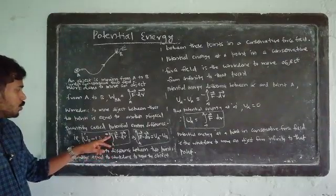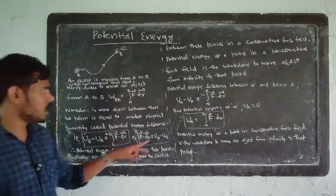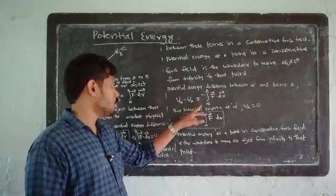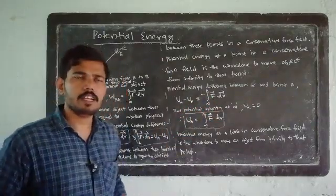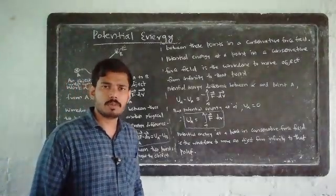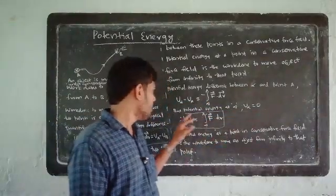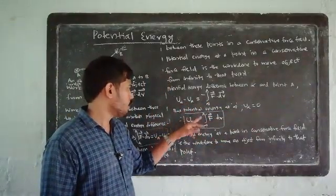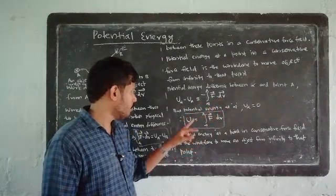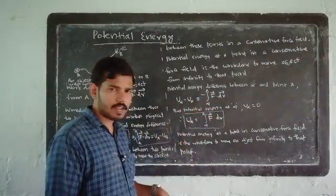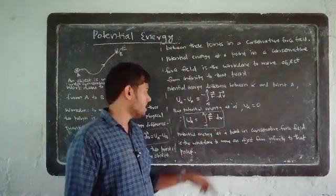Minus integral from infinity to A of F dot dR. U-infinity minus UA is equal to minus integral infinity to A of F dot dR. Since potential energy at infinity is zero, U-infinity equals zero. Then minus UA equals minus integral infinity to A of F dot dR, so UA equals integral infinity to A of F dot dR.